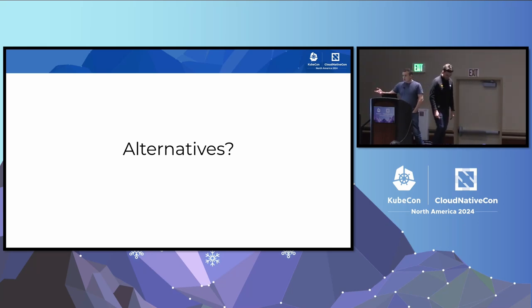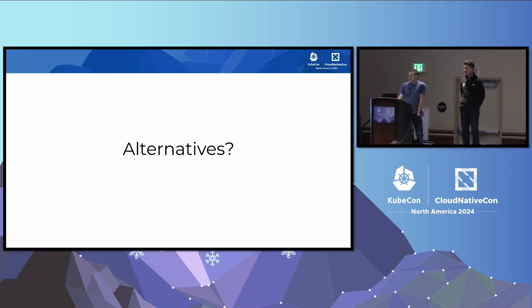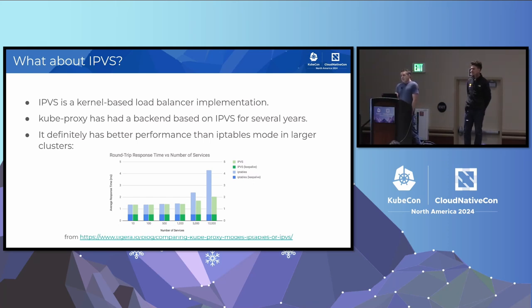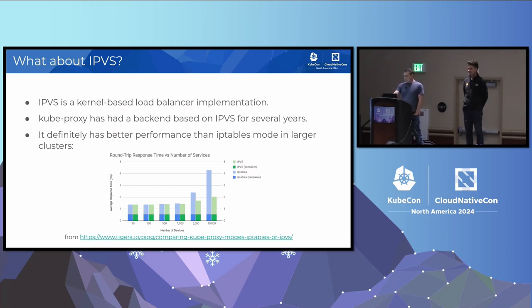So we already spoiled the ending — we end up with nftables — but how did we get there? One obvious answer would be IPVS, a kernel-based load balancer built into Linux. We already have an IPVS backend for KubeProxy and it has pretty good performance. For smaller clusters there's not much difference between iptables and IPVS, but at 5,000 services iptables is getting slow, and at 10,000 services it's getting really slow. So IPVS mode is pretty good, and for a while we thought maybe that's what would replace iptables eventually.